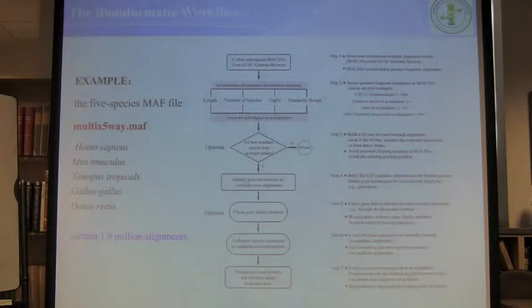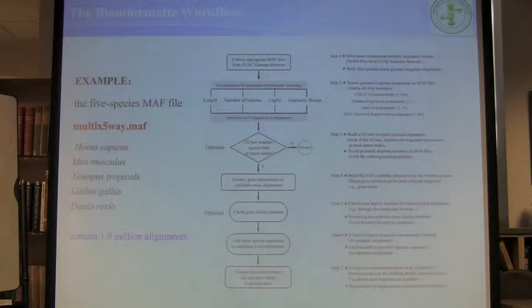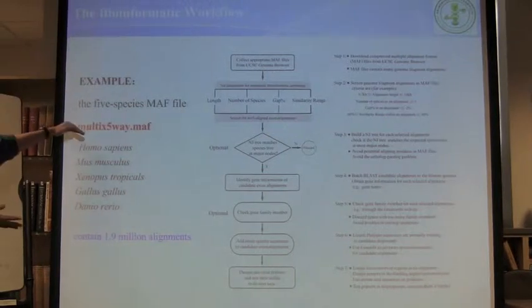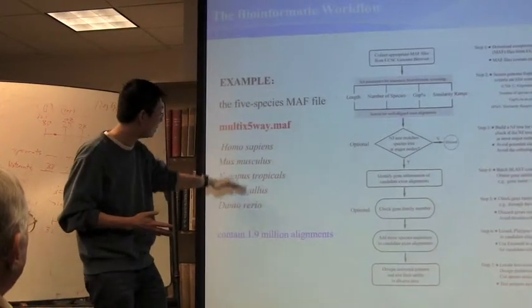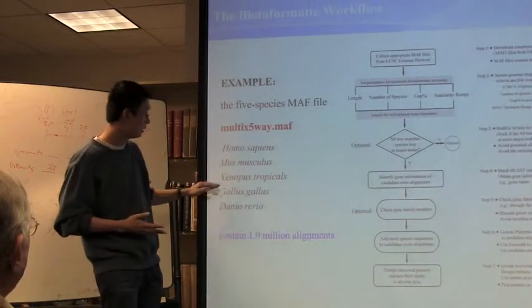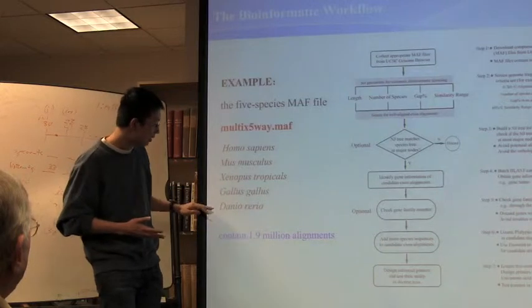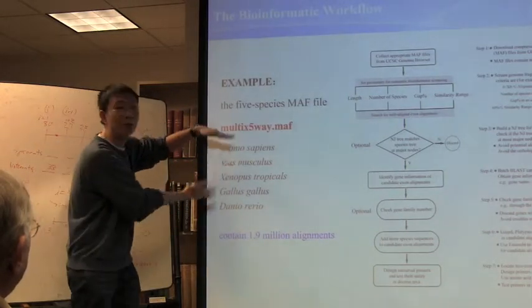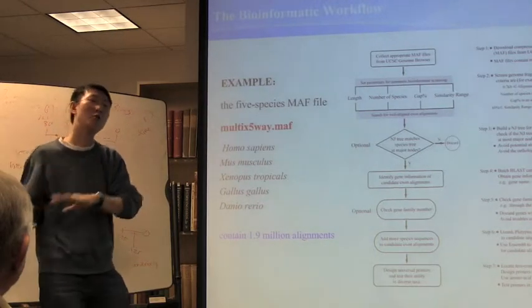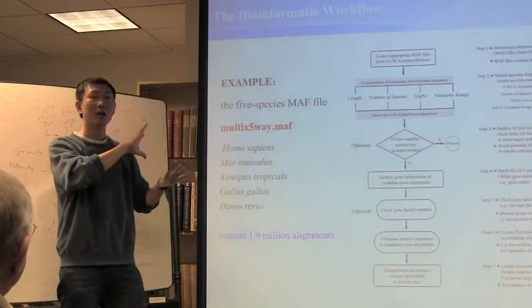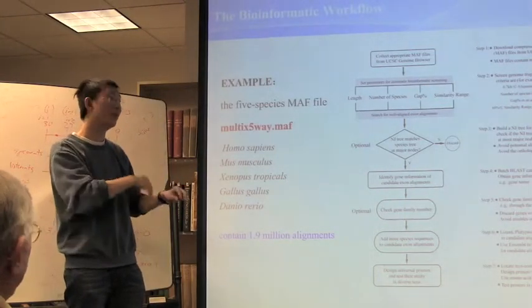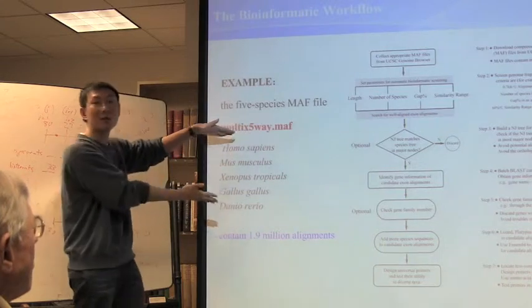We designed a bioinformatics pipeline and wrote a Python script for that. Here is an example with five species: human, mouse, frog, chicken, and zebrafish. The coverage spans from fish to human. So if you can find a sub-alignment very conserved within these five species, you find a marker that can work across from fish to human. This is the workflow: first you download the MAF file from UCSC for these five species.